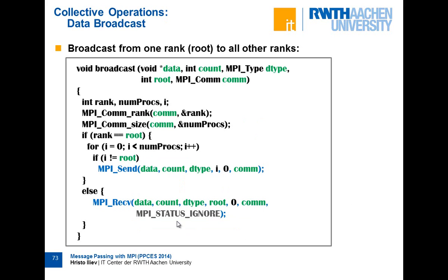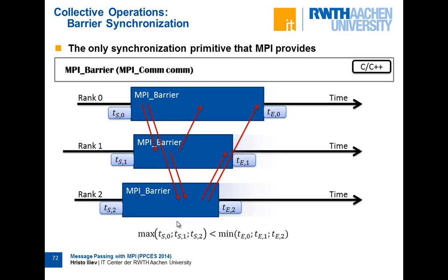Here's another collective operation — can you think of how to implement a barrier using send and receive? It's usually implemented as a ring: one process sends a message and it circles around. If you sent to every other process it would be N-squared messages, but with a ring you get linear complexity. Each rank sends to the next one, and when the first rank receives back the message it sent, it means the message has made a full circle and all are synchronized.